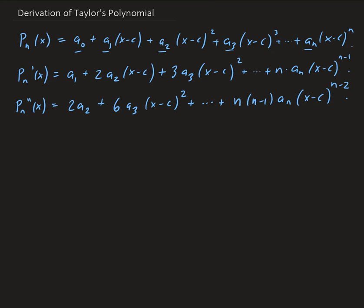We can continue taking successive derivatives. Because this is a degree N polynomial, eventually when we reach the nth derivative, we're going to be left with a constant: N times (N minus 1) times (N minus 2), all the way down to 2 times 1, times a_N. If we take one more derivative beyond that, we get 0.